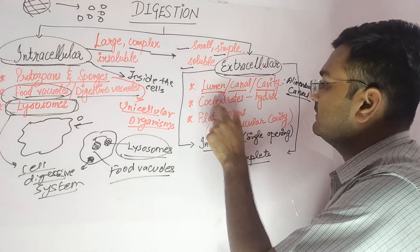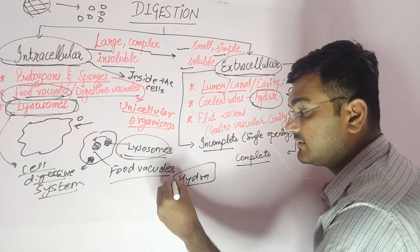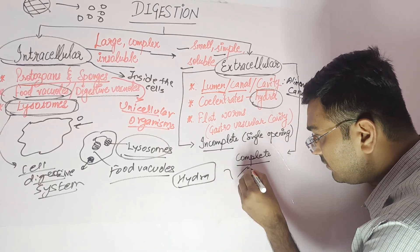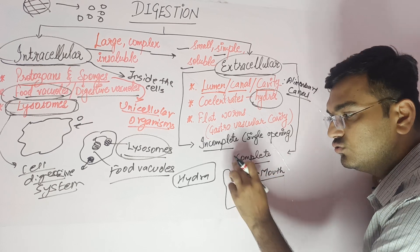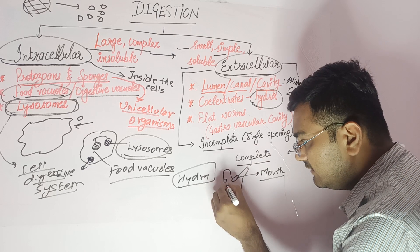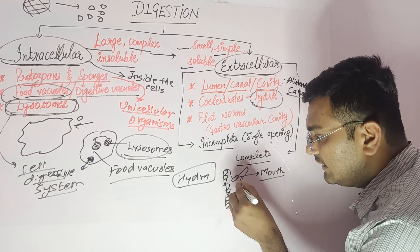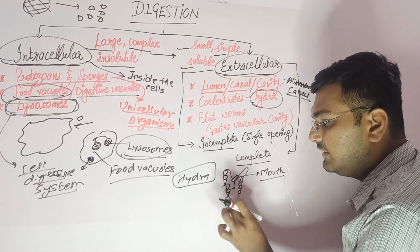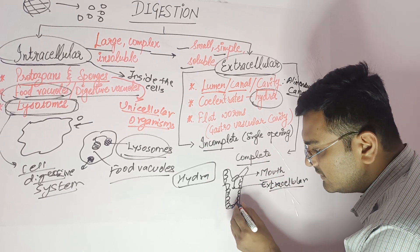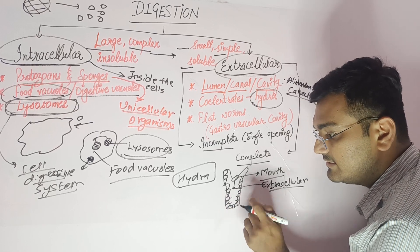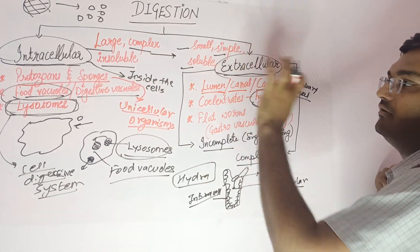Now, if we talk about smaller organisms, we will talk about hydra. Hydra has both mechanisms — both intracellular and extracellular digestion. Hydra has tentacles and an opening that serves as a mouth. Through this mouth it engulfs food particles, digesting them within the whole cavity — this is extracellular digestion. Similarly, in the cells lining the cavity, some digestion also occurs intracellularly. So hydra performs both intracellular and extracellular digestion, using lysosomes for the intracellular part.